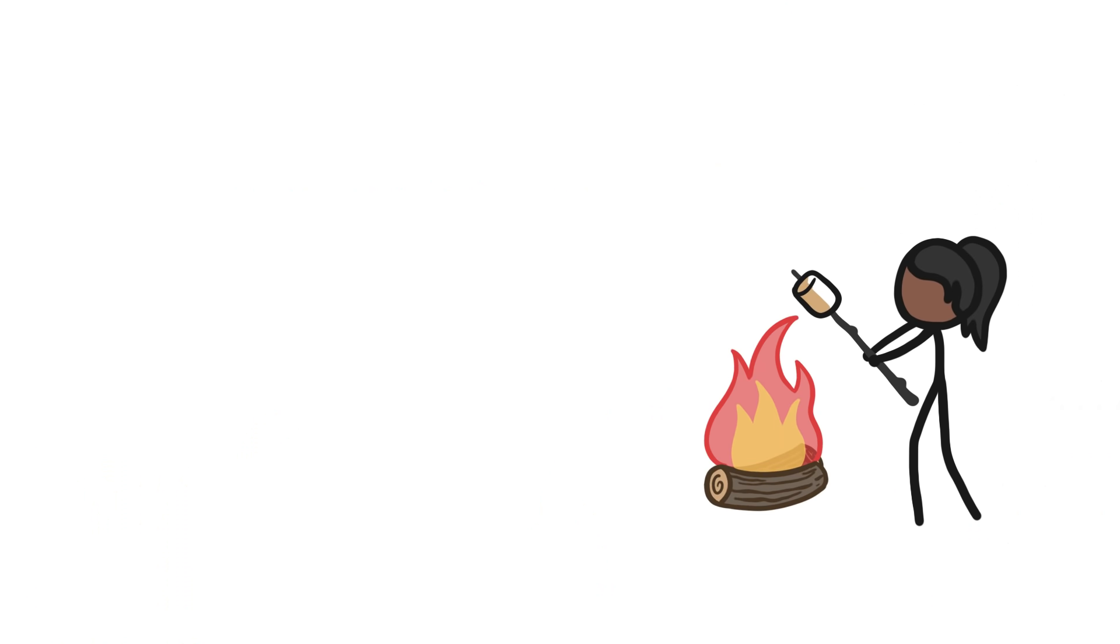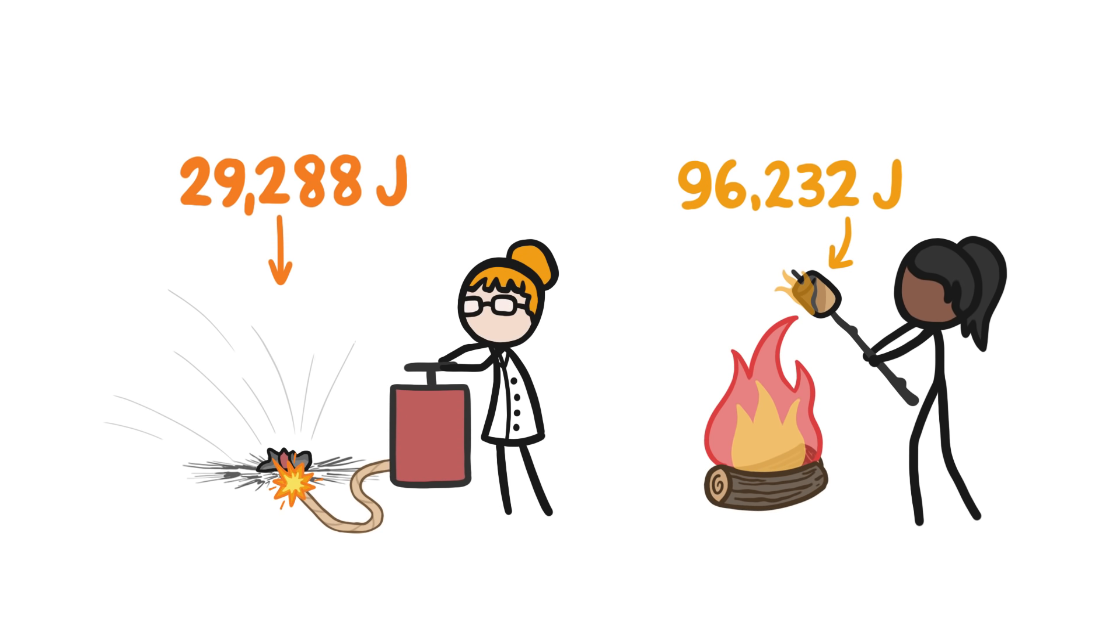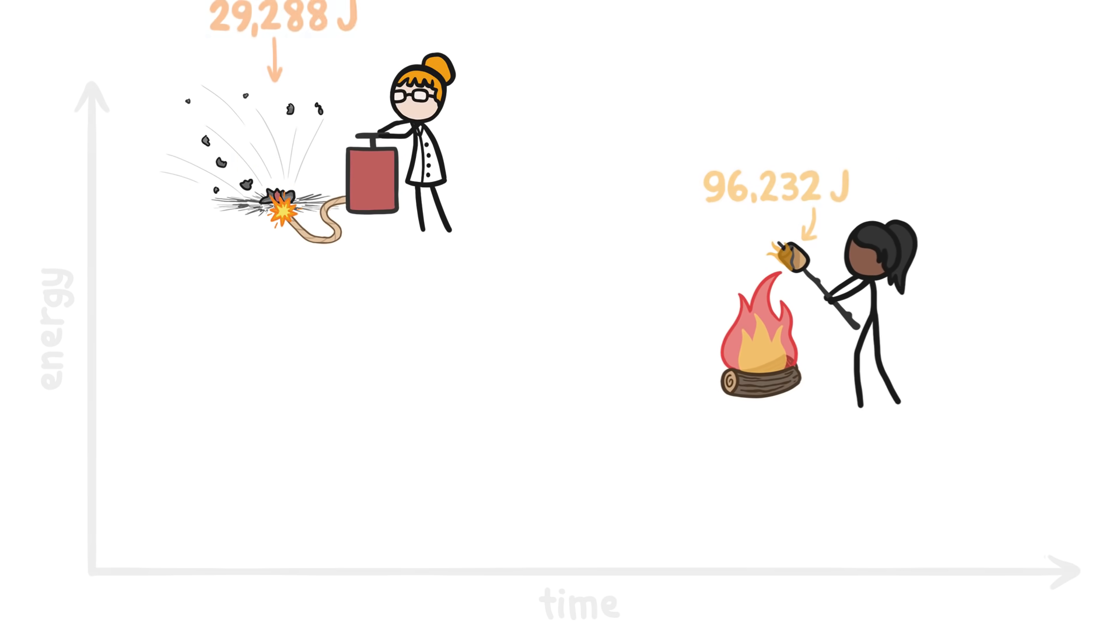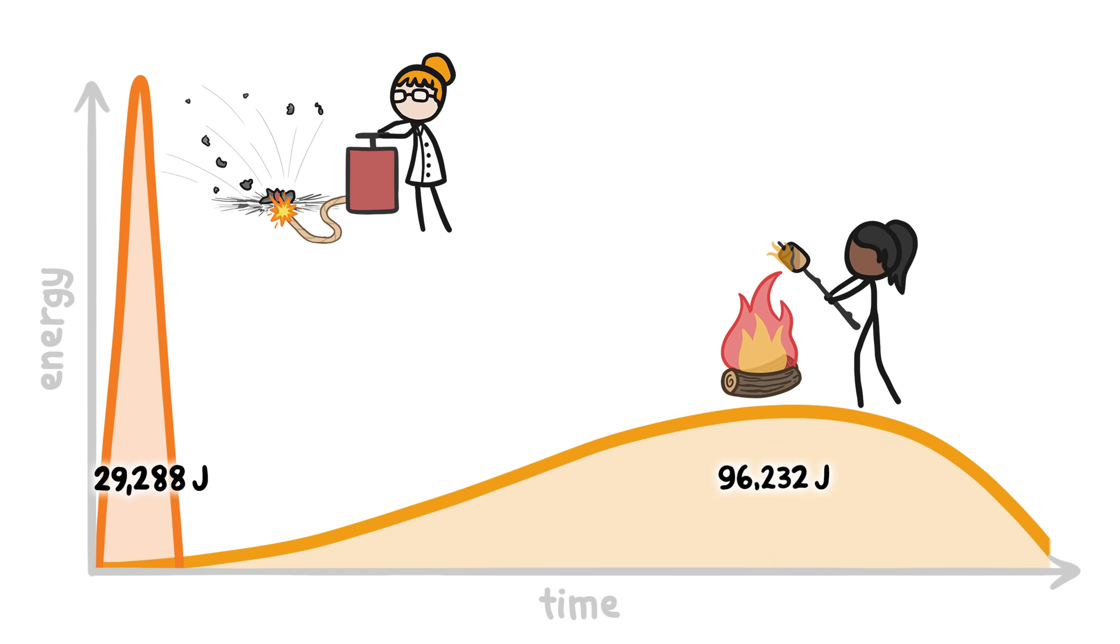So sure, when you roast, well, burn a marshmallow, you'll get way more energy than when you detonate an equal mass of TNT. But you'll release all that energy over a much longer time.